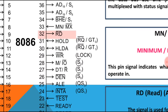HOLD and HLDA: the HOLD pin is enabled when there is a request from an external master device. After receiving the request, the processor allocates the data bus to the external device and sends an acknowledgement via HLDA (Hold Acknowledge). In maximum mode, RQ/GT0 and GT1 pins serve the same purpose — GT0 has the highest priority when both requests arrive simultaneously.